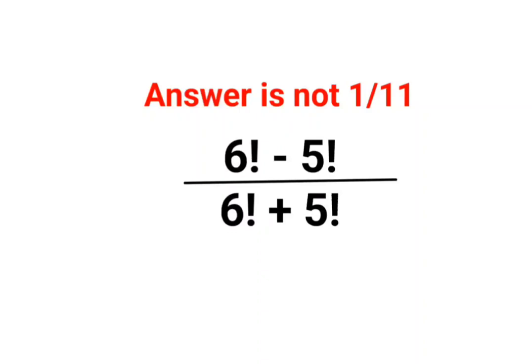Welcome everyone. A lot of people thought this is easy: 6 minus 5 is 1 and 6 plus 5 is 11, so the answer should be 1 by 11.